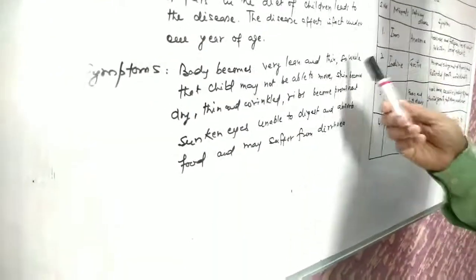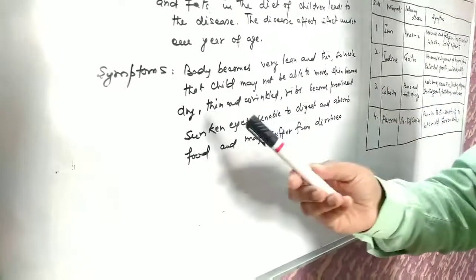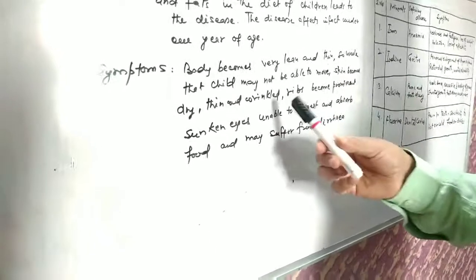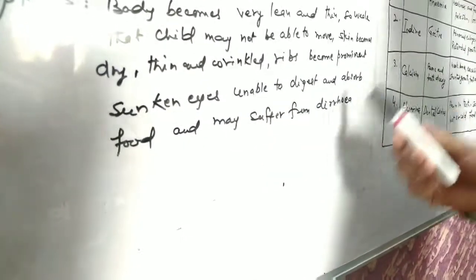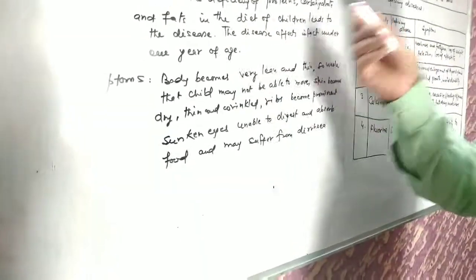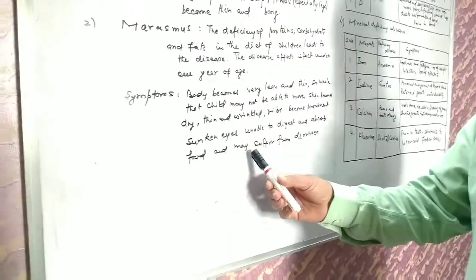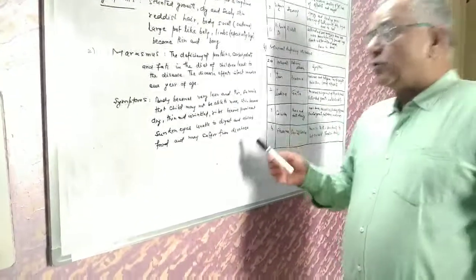What are the symptoms? Body becomes very lean, thin and so weak the child may not be able to move. Skin becomes dry, thin and wrinkled. Ribs become prominent - the chest bones become very visible. Sunken eyes - eyes sink inward. Unable to digest and absorb food. Many times they may suffer from diarrhea which may lead to further complications.